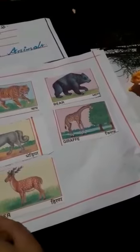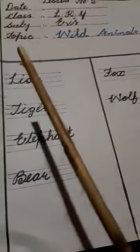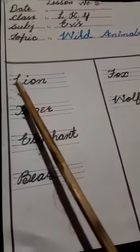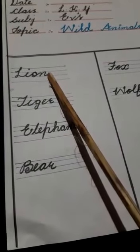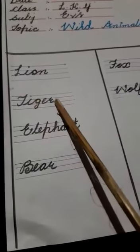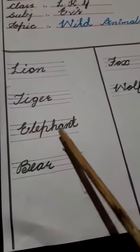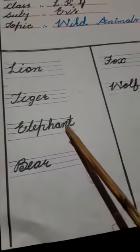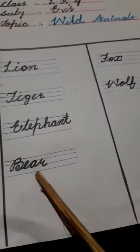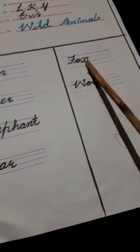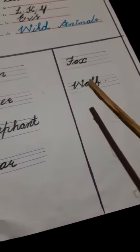Let us read these wild animals loudly. Lion, L-I-O-N, lion. Lion means share. Tiger. Tiger means cheetah. E-L-E-P-H-A-N-T, Elephant. Elephant means hathi. B-E-A-R, bear. Bear means balu. F-O-X, fox. Fox means loam di. W-O-L-F, wolf. Wolf means bedia.